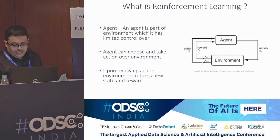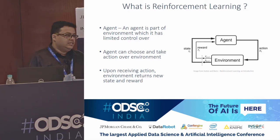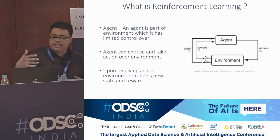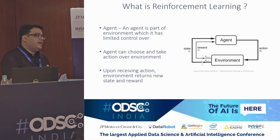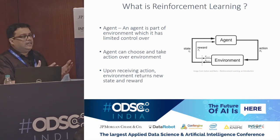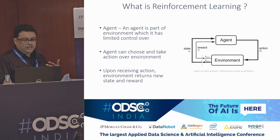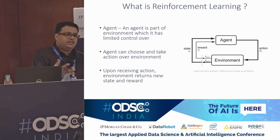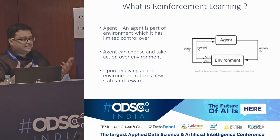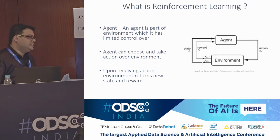You have seen this diagram before. There is an environment and there is an agent. The agent takes an action at time t on the environment, and what it gets back is the new state and the reward signal. Depending on this information — the reward and new state — the agent decides what the next action will be. That is why it is called agent-based learning.